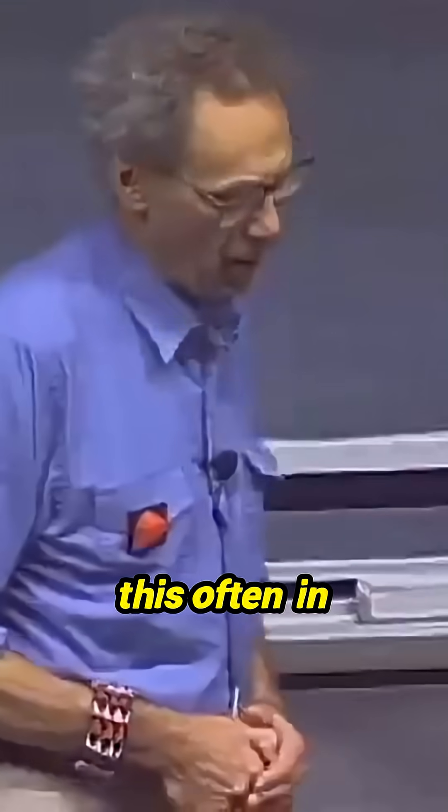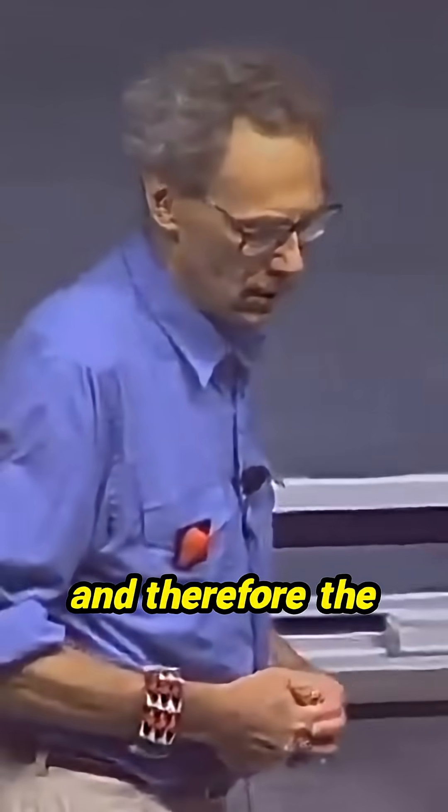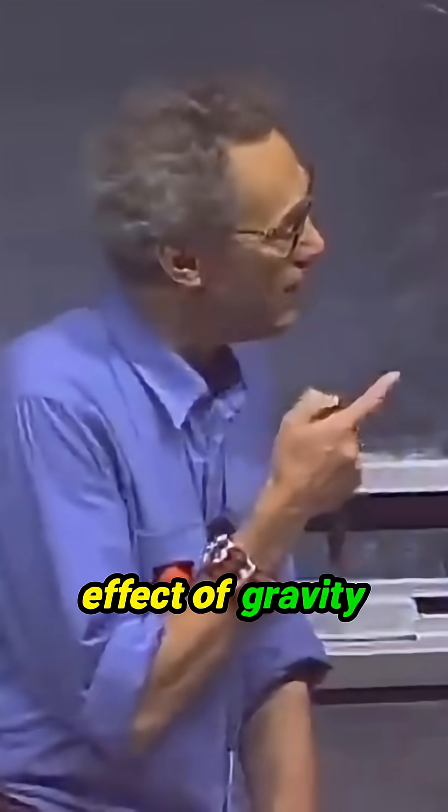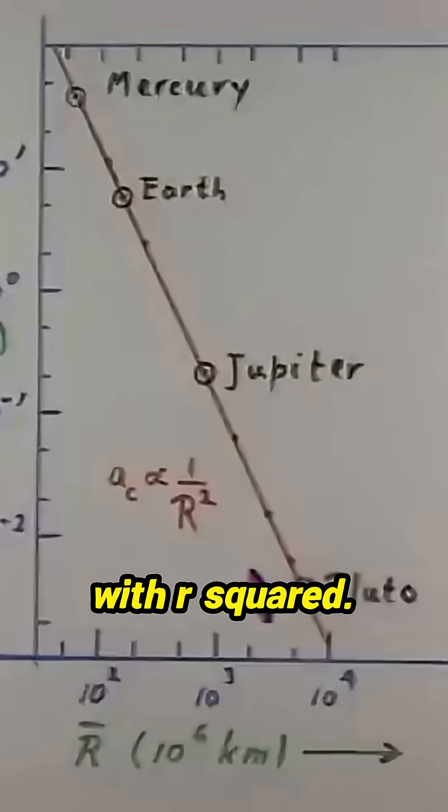We refer to this often in physics as the one over r squared law, and therefore the effect of gravity itself must go down with r squared.